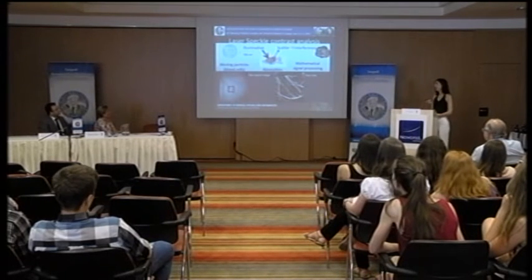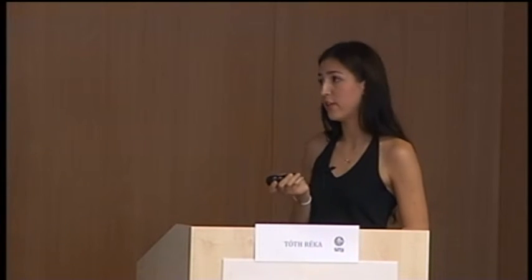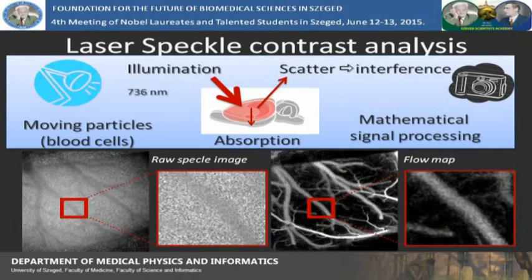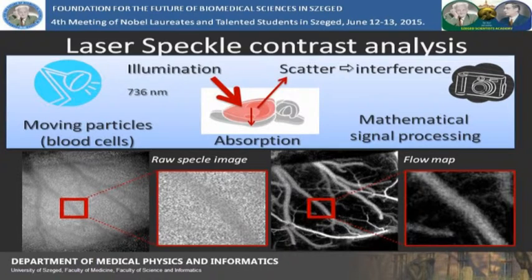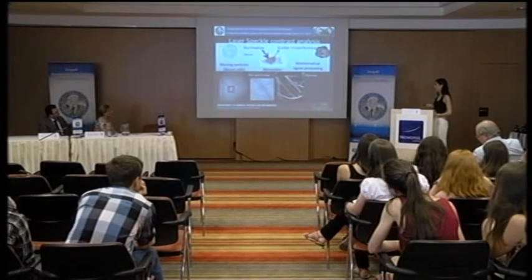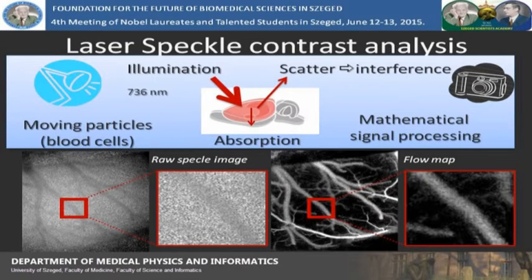Laser speckle contrast analysis is based on the scattering and interference of light. If we illuminate an uneven surface with coherent laser light, the picture will show a characteristic speckle pattern because the light scatters in different directions. If the picture is still, the positions of the dark spots do not change, but if moving particles — the blood cells — move, the pattern of the dark spots in those places will change, causing a low-contrast blurry picture, while still parts retain higher contrast. Mathematically, we can calculate the velocity of blood flow from the extent of the blur and create a flow map.